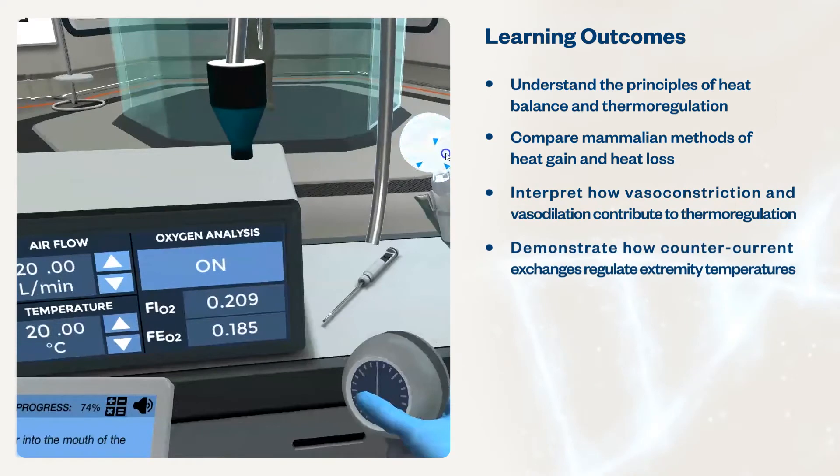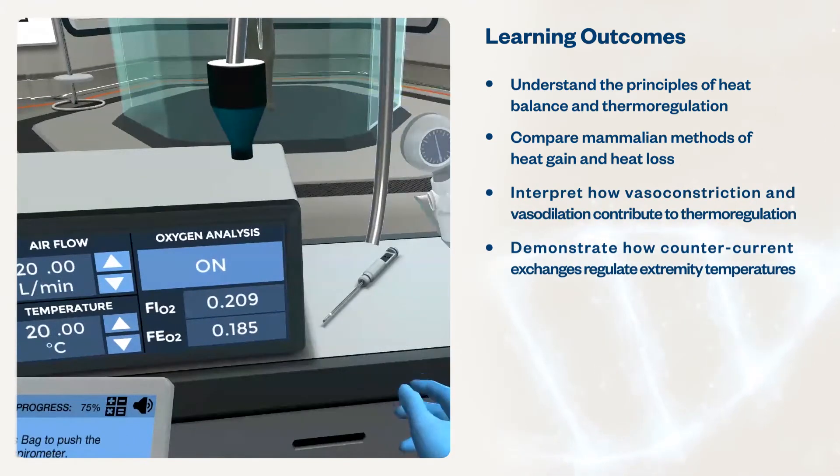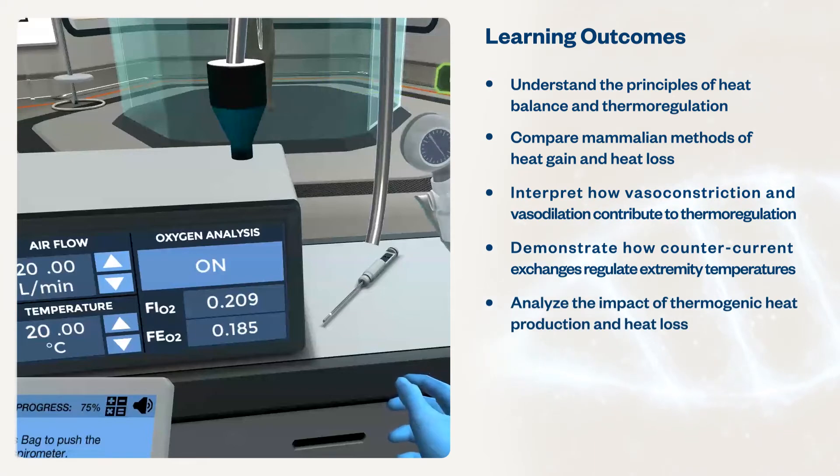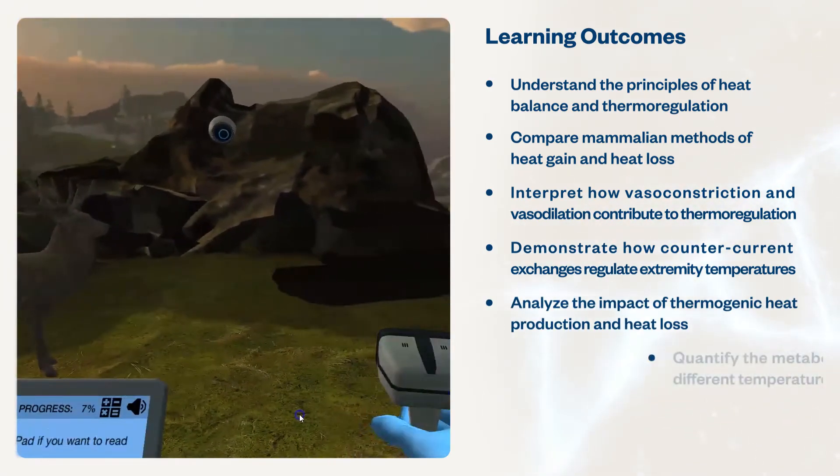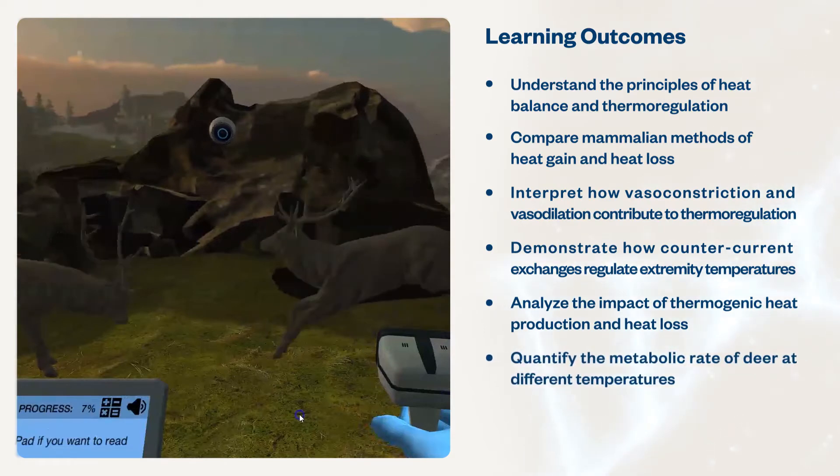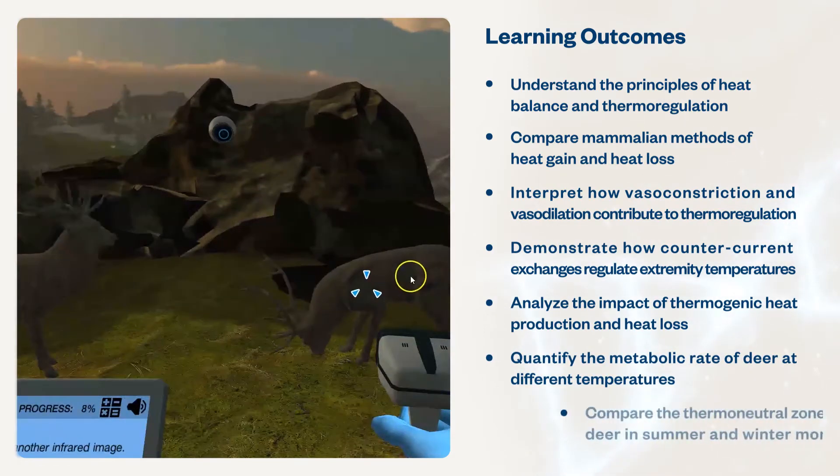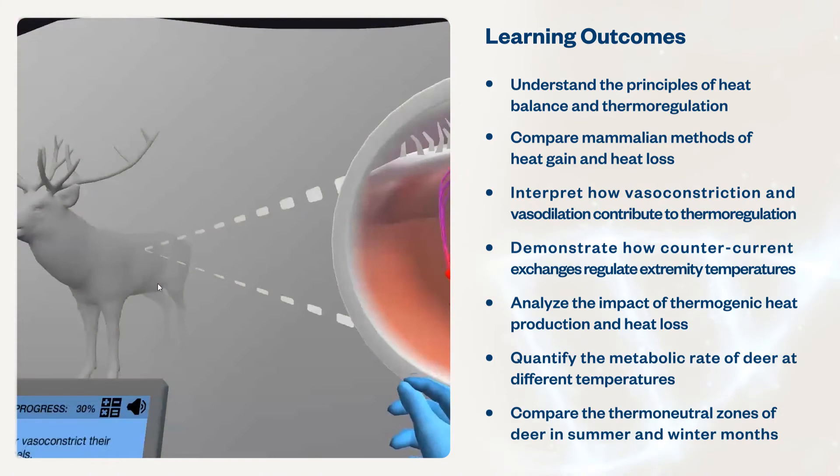Students will demonstrate how counter-current exchanges regulate extremity temperatures, analyze the impact of thermogenic heat production and heat loss on survival capabilities of deer, quantify the metabolic rate of deer at different temperatures, and compare the thermoneutral zones of deer in summer and winter months.